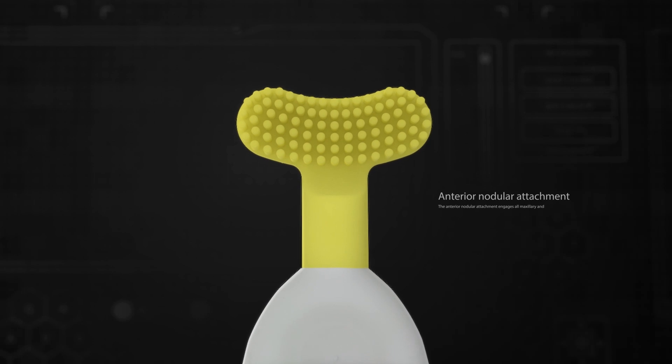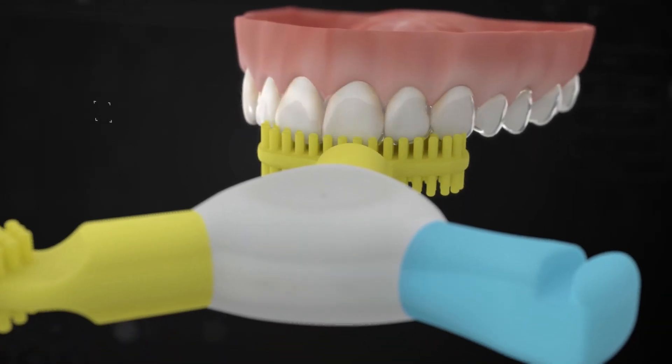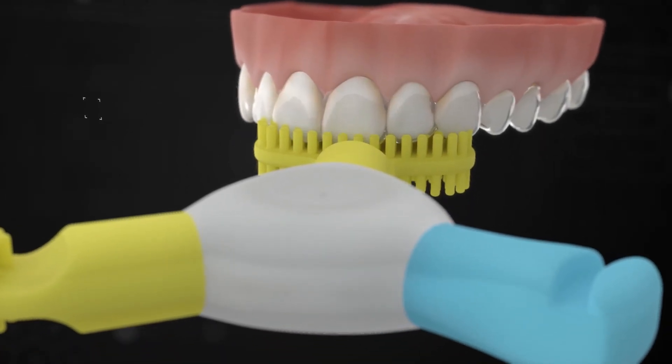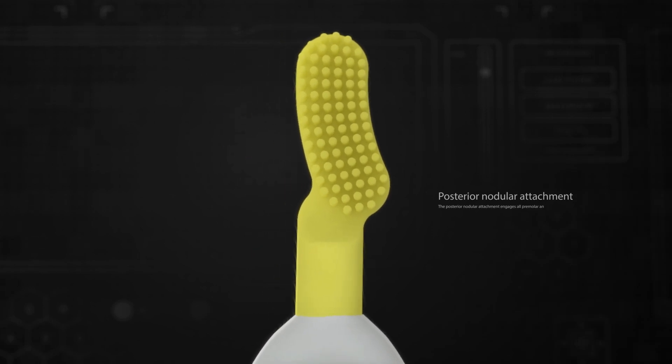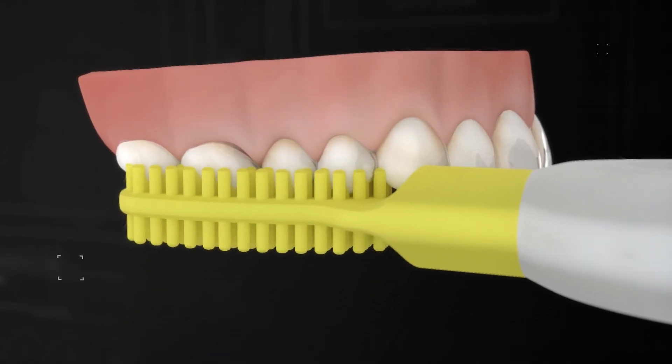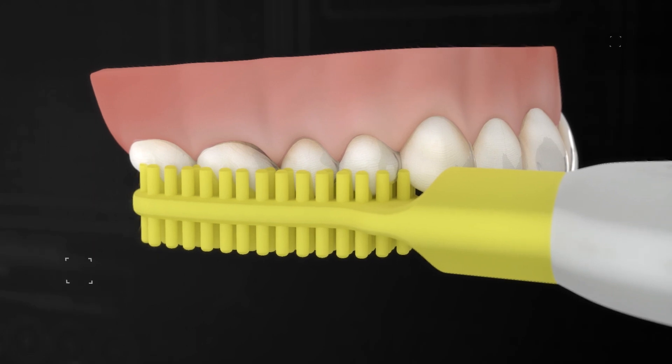The anterior nodular attachment engages all maxillary and mandibular anterior teeth. The posterior nodular attachment engages all premolar and molar teeth regardless of the occlusal plane.